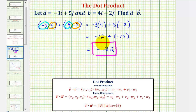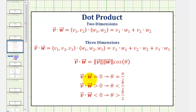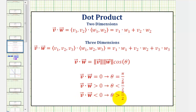Depending on whether the dot product is positive, negative, or zero, it gives us information about the angle theta between the two vectors. When the dot product is equal to zero, the two vectors are orthogonal or perpendicular, and theta is equal to pi over two radians. If the dot product is positive, then theta is less than pi over two radians. If the dot product is less than zero — which is our case — then the angle theta would be greater than pi over two radians.